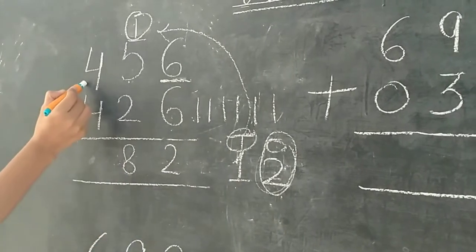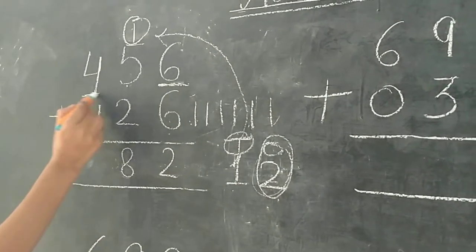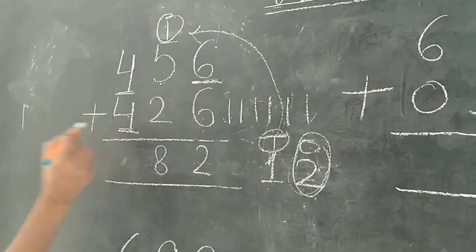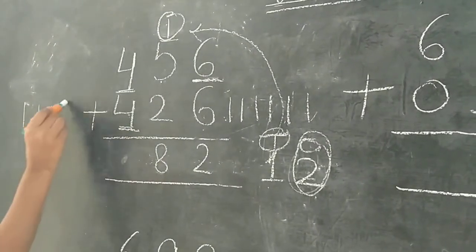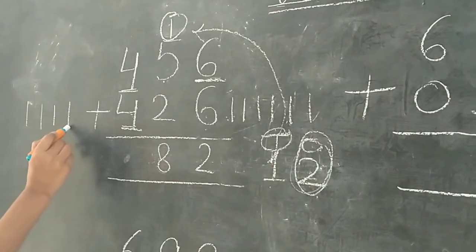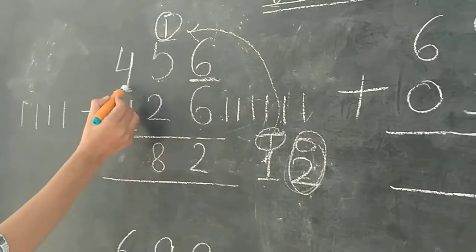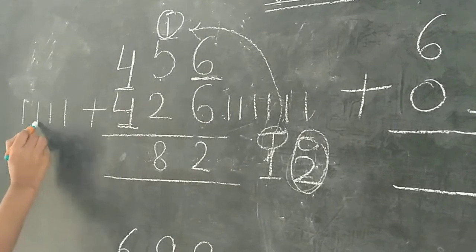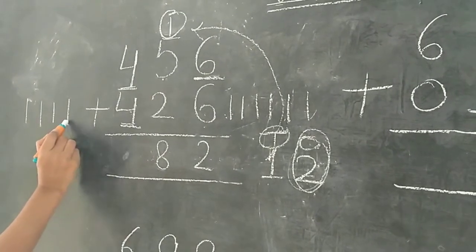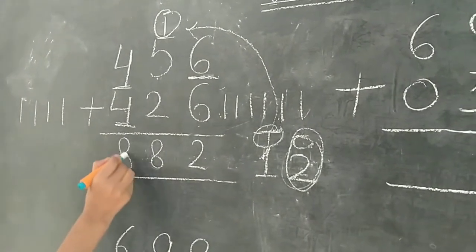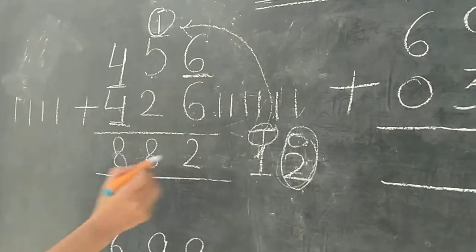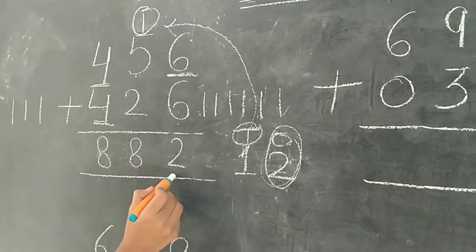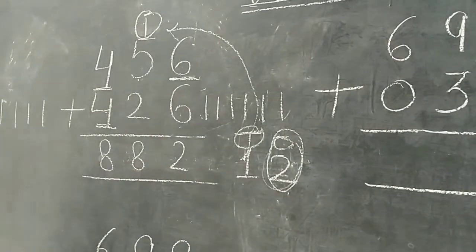Now 4 is already here and we draw here 4 lines: 1, 2, 3, 4. Now we have to count after 4: 4, 5, 6, 7, 8. So we write here 8. The answer is 882.